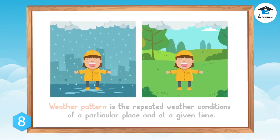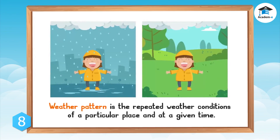A weather pattern is the repeated weather conditions of a particular place at a given time. In the Philippines, the two types of weather appear alternately throughout the year at different periods of time.